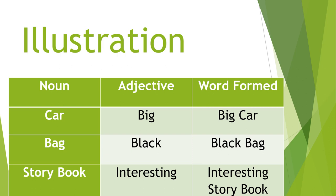A car can be small (choti) or big (badi). A bag can be red (lal) or black (kala) — so here the adjective 'black' is used, and the word formed will be 'black bag.' A storybook can be boring or interesting — so the word formed will be 'interesting storybook.' Here we can see that big, black, and interesting are considered adjectives. There are many more adjectives available. Words that describe the specific characteristics of every single thing are called adjectives.